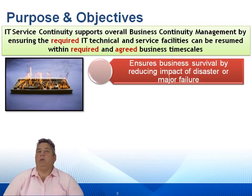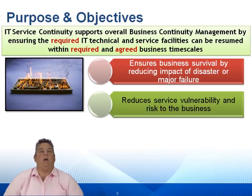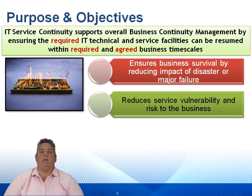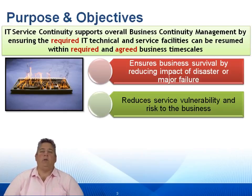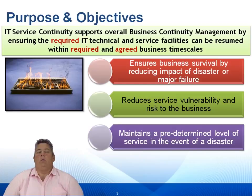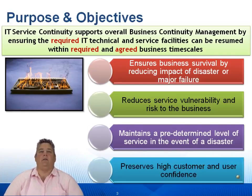We want to ensure business survival by reducing the impact of a disaster or a major failure. Through our actions, we also want to reduce service vulnerability and risk to the business. This is another process that's going to actively assess risk. We looked at availability, we looked at security, and now we're looking at continuity — three different views of risk incorporated in our service designs. We're going to ensure we maintain a predetermined level of service in the event of a disaster.